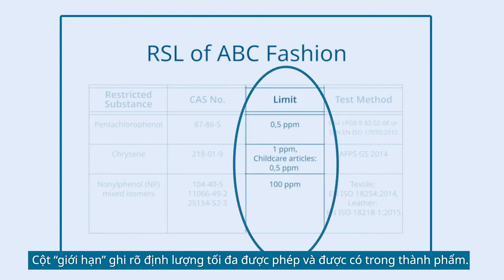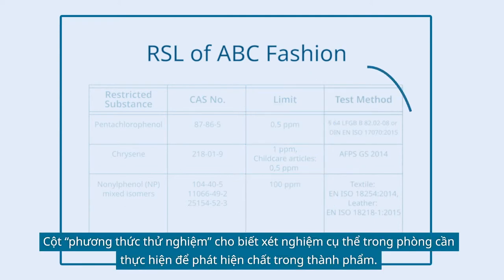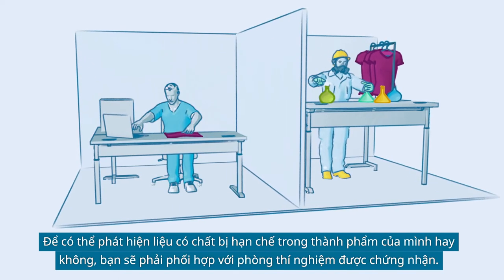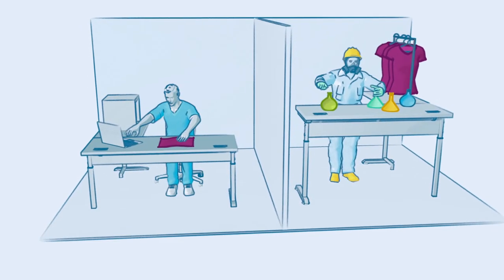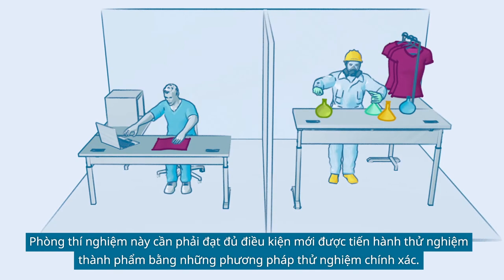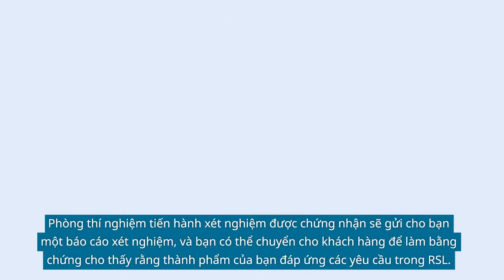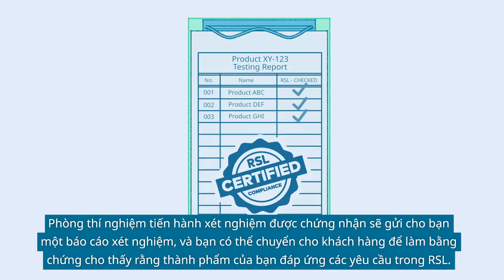The Limit column shows the maximum allowable and detectable amount of that substance in the finished product. Some substances are completely banned and are not allowed to be found in the end product at all. The Test Method column indicates the specific laboratory test required for detecting that substance. To verify conformance, you will need to collaborate with a certified testing laboratory qualified to test with the correct methods. The laboratory will send you a test report, which you can forward to your customer as proof that your end products fulfill the RSL requirements.